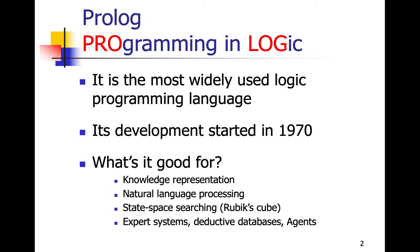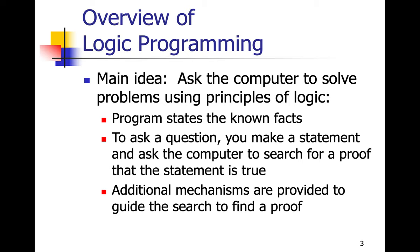To make an intelligent system, we load it up with information — facts, like just because you live in Santa Clara County doesn't mean you're going to catch the coronavirus, and rules combining those facts. Prolog is used for knowledge representation, natural language processing, state space searching like the Rubik's Cube, expert systems, deductive databases, and intelligent agents. If you take an AI class you'll see Prolog used a lot in those areas. This is a programming language concepts course, so I won't go through all the AI stuff, but it's a fun class you might want to take.